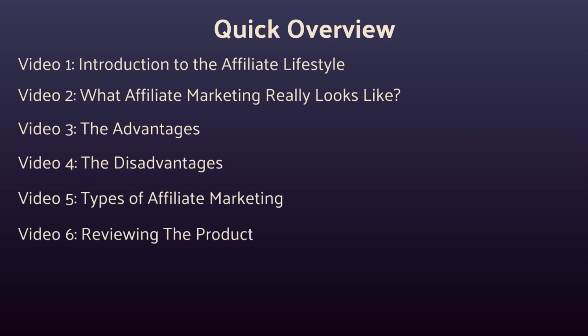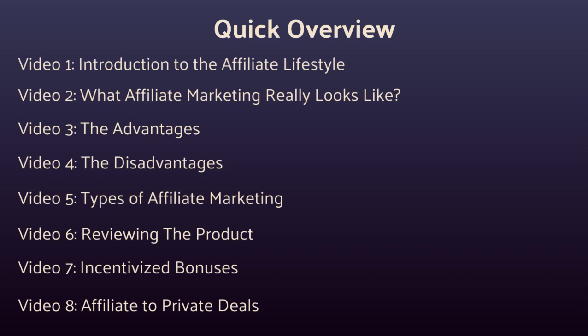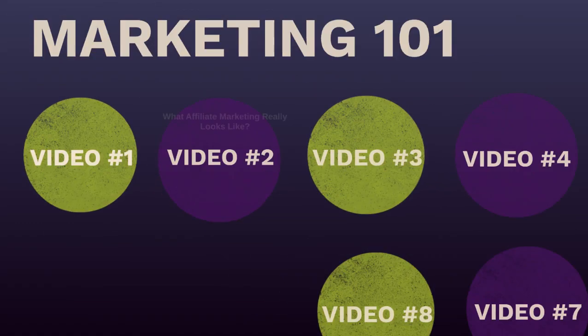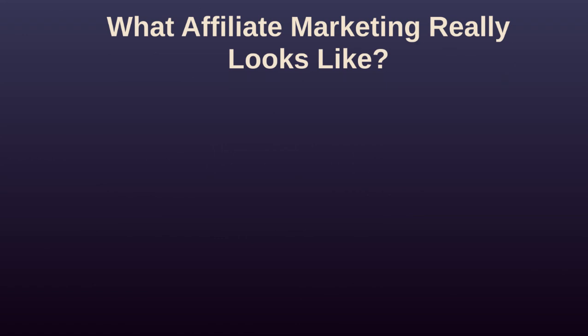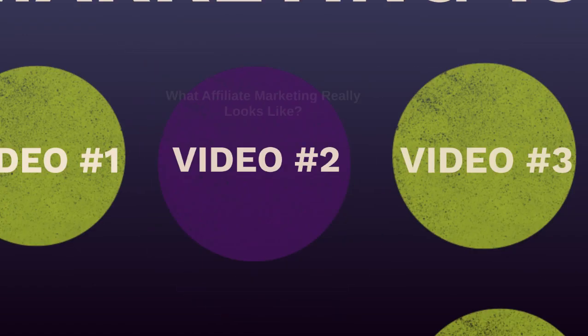Video number four covers the disadvantages. Video number five covers types of affiliate marketing, different payment structures, and all that. Video number six is about reviewing the product — and while this seems basic, 90% of affiliates we've watched actually don't do this, and by skipping this process you lose out on your conversion rate. Video number seven covers incentivized bonuses, which is an advanced strategy. And video number eight talks about how to go from affiliate deals to private deals, which allows you to make more money. With that said, let's move on to video number two and talk about what affiliate marketing really looks like.